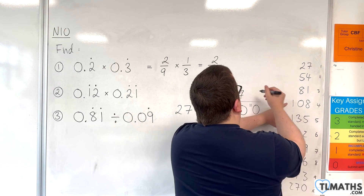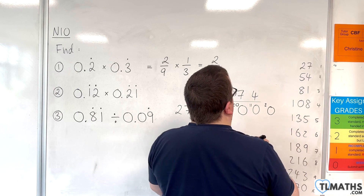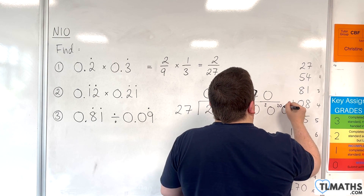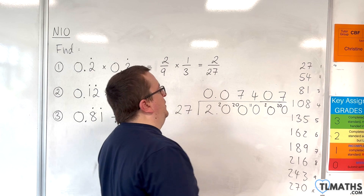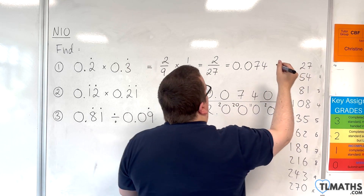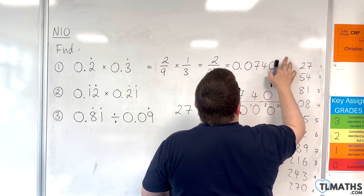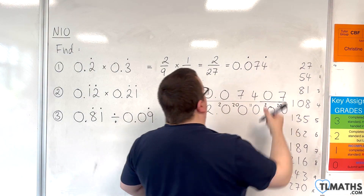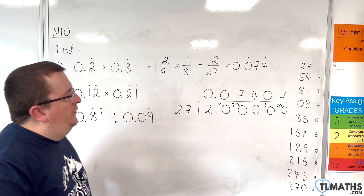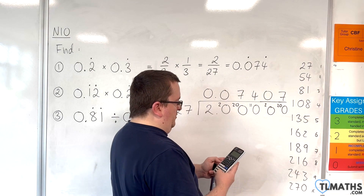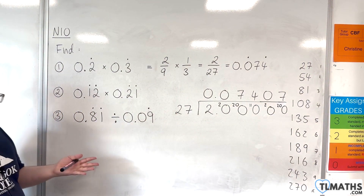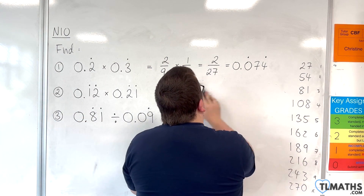Continuing the long division: we then have 20, and we're back to 7 again, so the pattern repeats: 7, 4, 0, 7, 4, 0... So the result is 0.074 recurring — with 0, 7, 4 repeating. Let's just double-check that on the calculator: 2 divided by 27. Yes, that confirms it. There's our first answer.